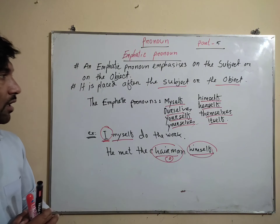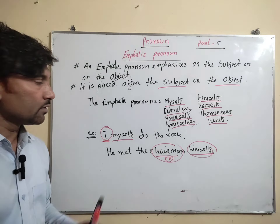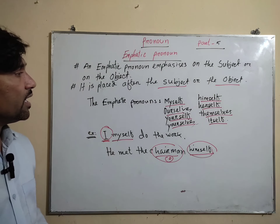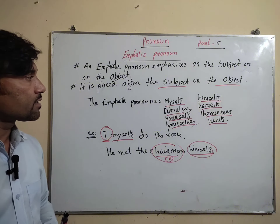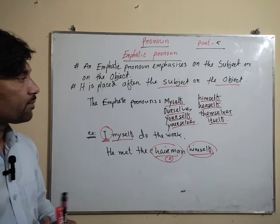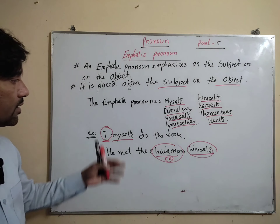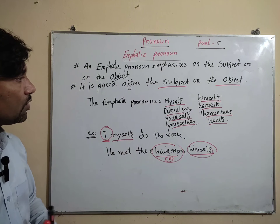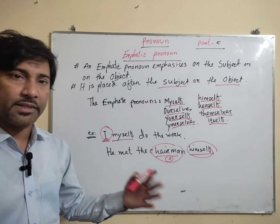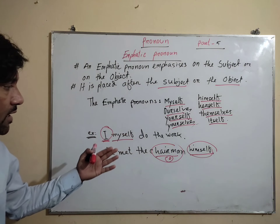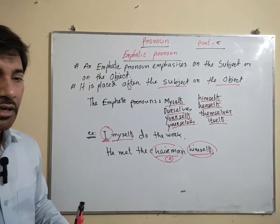Reflexive pronouns are always placed after the verb as an object and refer back to the subject, whereas emphatic pronouns are placed after the subject or after the object to emphasize them. This is the difference between emphatic and reflexive pronouns.